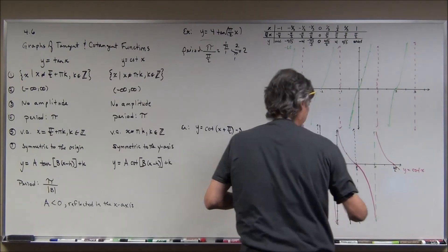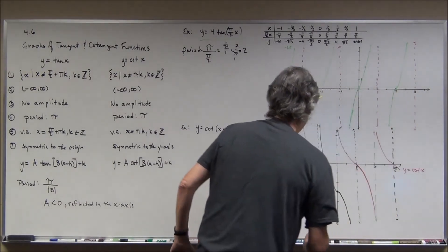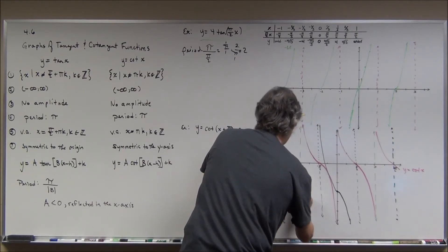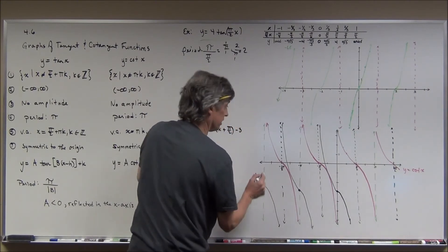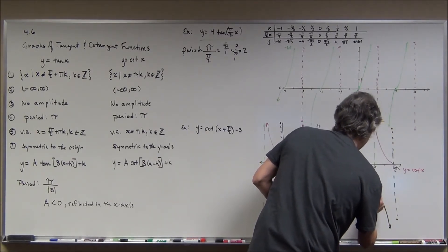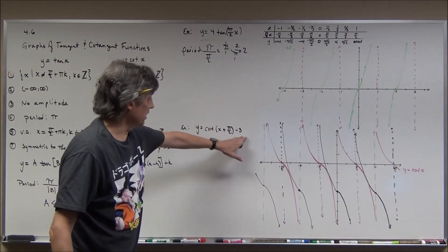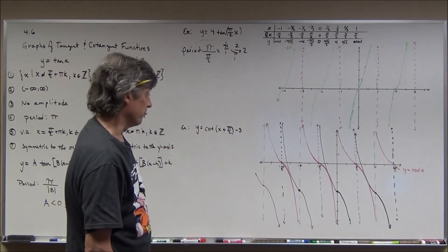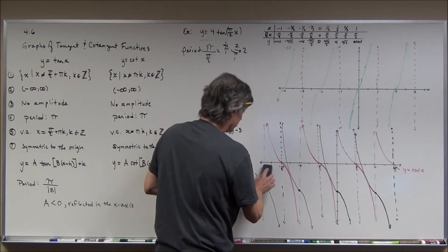I continue shifting those asymptotes and then sketch the curve piece by piece — plug in a few points to help guide the shape. The pink piece shifts over and comes down, and I repeat the pattern across the graph. You can see how the horizontal translation of π/2 to the left and the vertical shift of 3 downward have moved the entire cotangent graph.